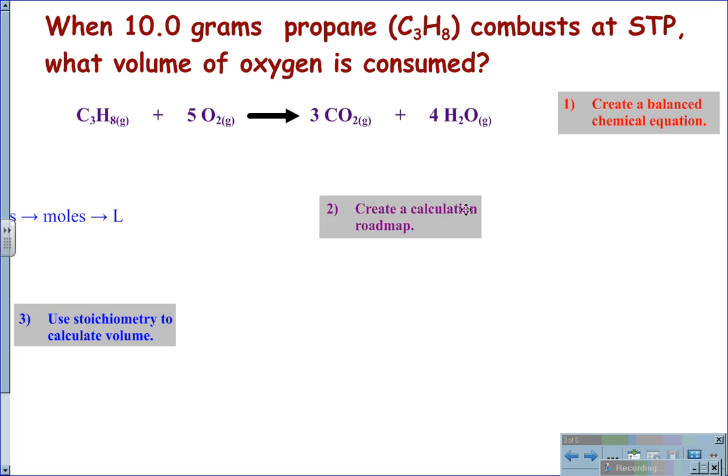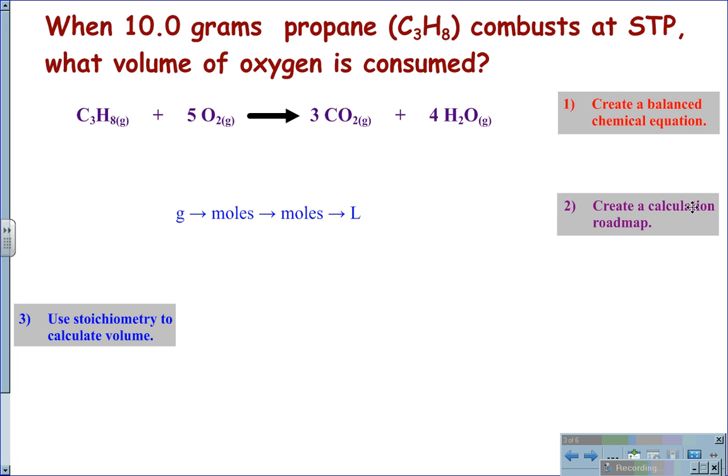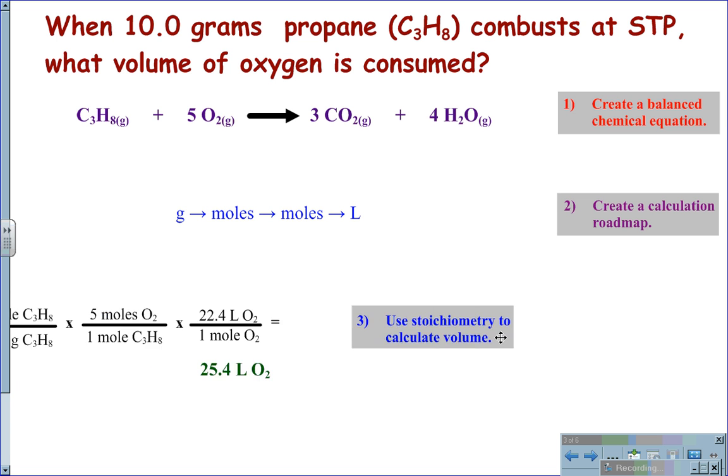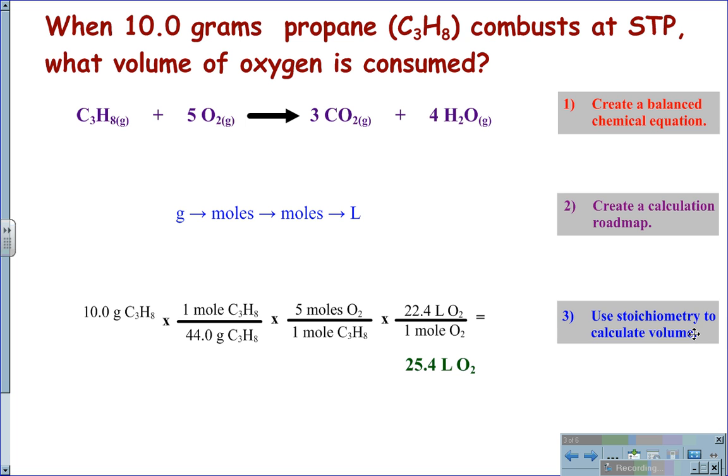Next, we write out a basic stoichiometry roadmap, taking us from grams to moles to moles to liters, and then calculate the stoichiometry. 10 grams of propane times one mole of propane over its gram formula mass, 44 grams of propane, then use the mole ratio from the balanced chemical equation that there are five moles of oxygen for every one mole of propane, and then use the conversion factor of Avogadro's value of 22.4 liters of oxygen for every one mole. And then using our calculators, we calculate the value to be 25.4 liters of oxygen.